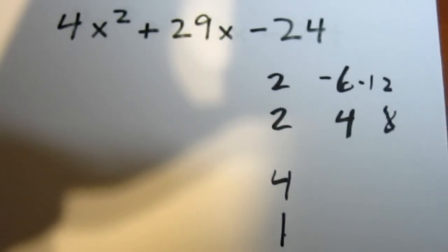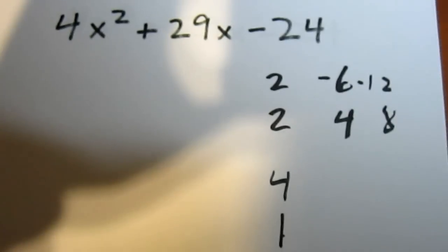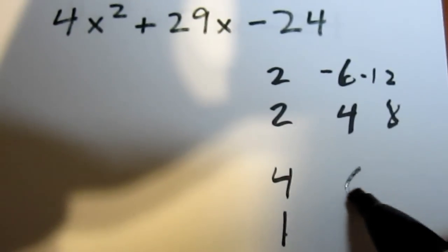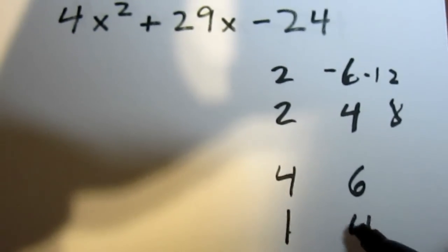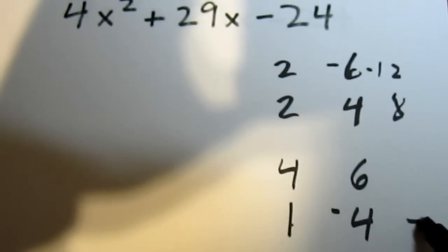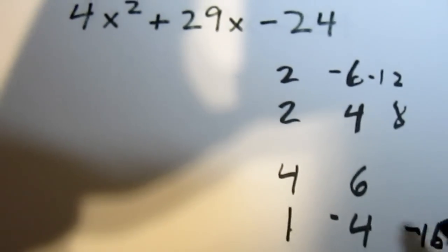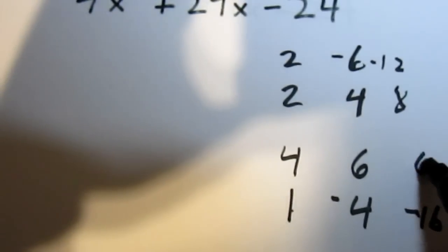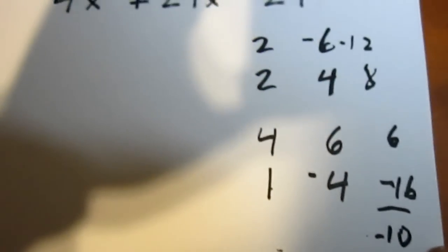If we try 4 and 1, then we can say that the two numbers that multiply to negative 24 might be 6 and 4, and we'll make the 4 negative. 4 times negative 4 is negative 16, and 1 times 6 is 6. 6 minus 16 is negative 10. Okay, that's not good.